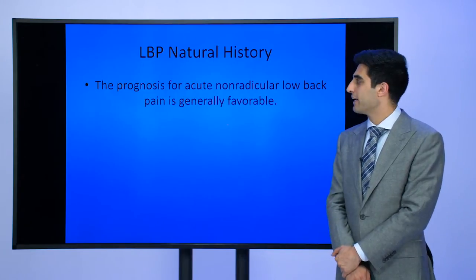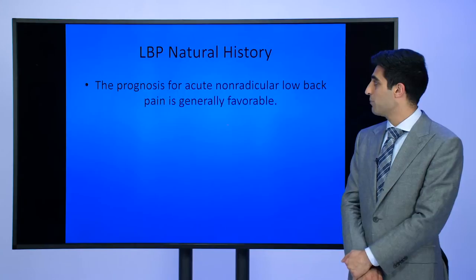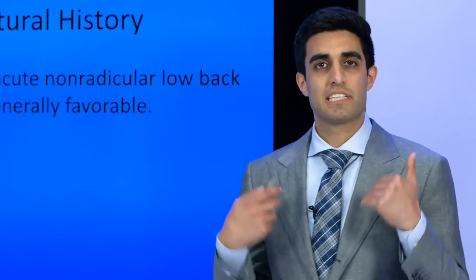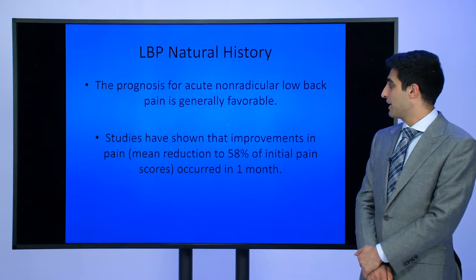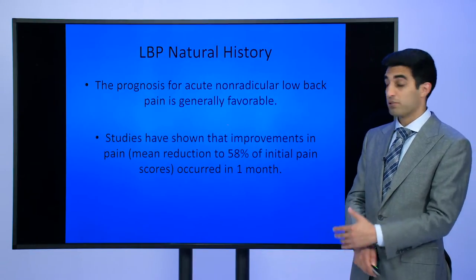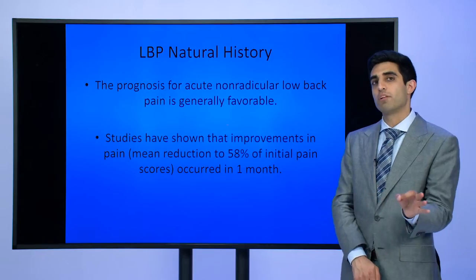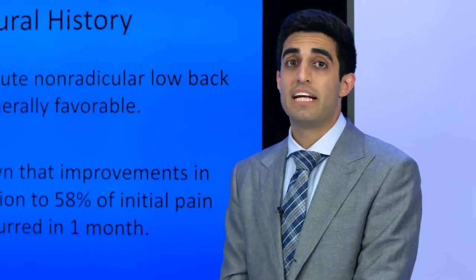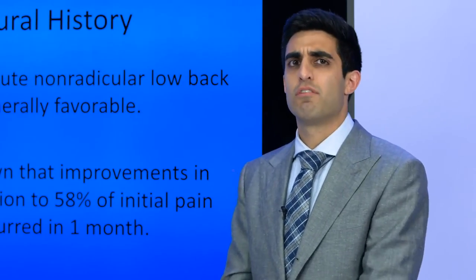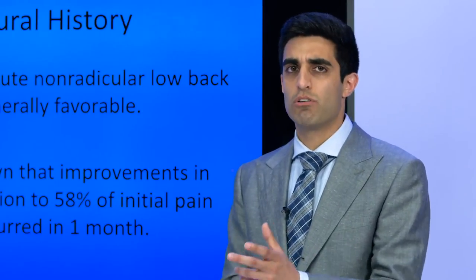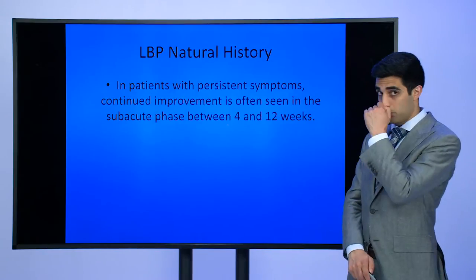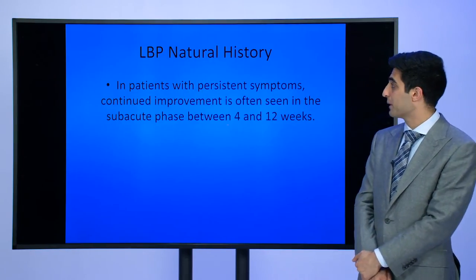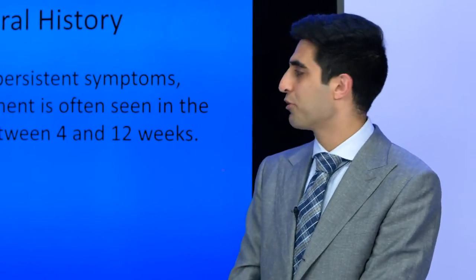What's the natural history of low back pain? The prognosis for acute, non-radicular low back pain — meaning no sciatica or pain shooting down the leg — is generally favorable. Studies show that improvements of about 50% or greater in initial pain scores occur within one month. Even if a patient is not completely better after one month, they can still see incremental improvements up to three months in the sub-acute phase between the four and twelve week mark.